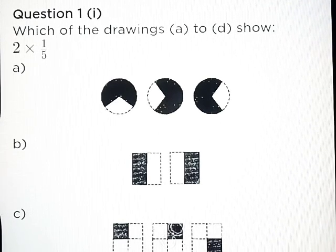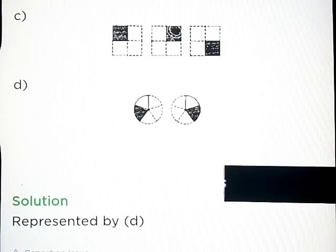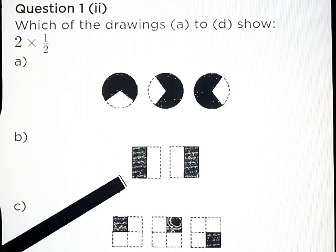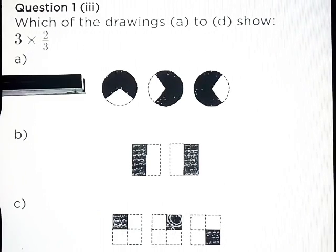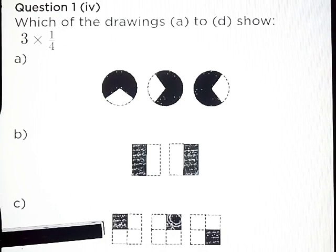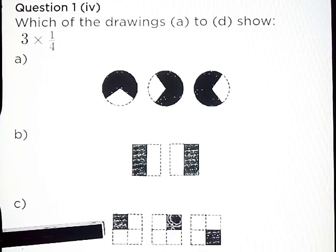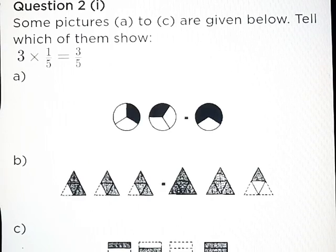Answer: represented by D. Part B: 2 into 1 upon 2 — answer represented by part B. Part C: 3 into 2 upon 3 — answer represented by part A. Part D: 3 into 1 upon 4 — answer represented by part C.